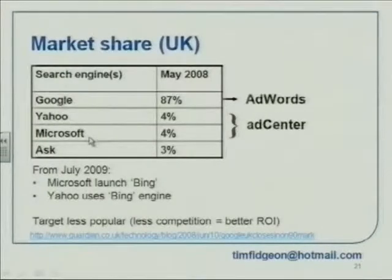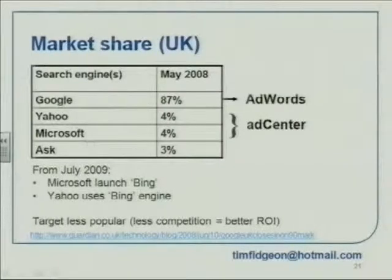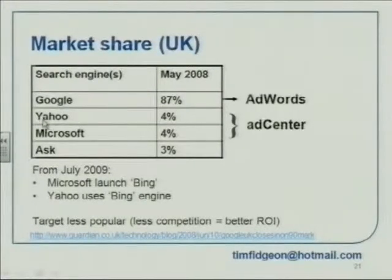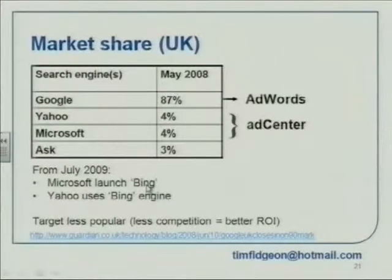Market share in the UK: Google rules the roost. AdWords is the tool you use to manage your Google paid search. Yahoo and Microsoft are both run by Bing — and that is managed through a tool called AdCenter. They run according to the same principles. Yahoo runs off the same Bing search engine as Microsoft, so if you run a campaign in Bing it will appear on bing.com, bing.co.uk, and also yahoo.co.uk, because they're drawing from the same pool.